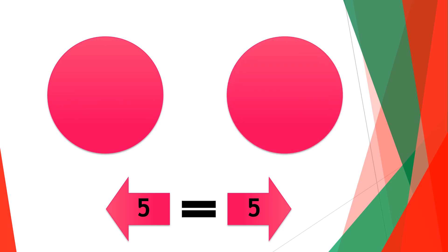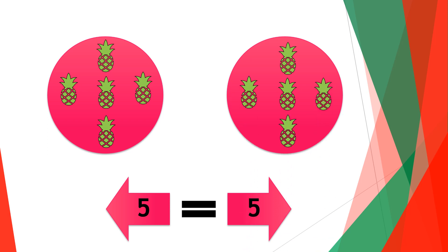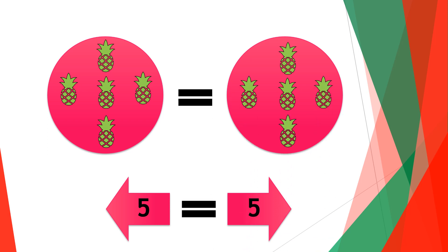And five pineapples on the other side — one, two, three, four, five and one, two, three, four, five — this means that five pineapples equals five pineapples, and this clearly shows that five is equal to five.